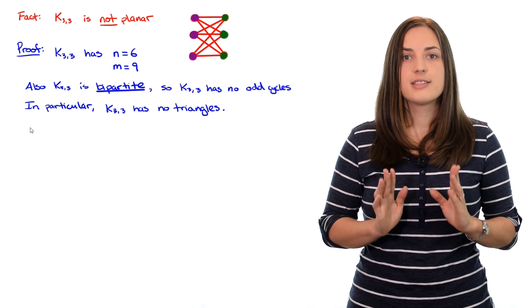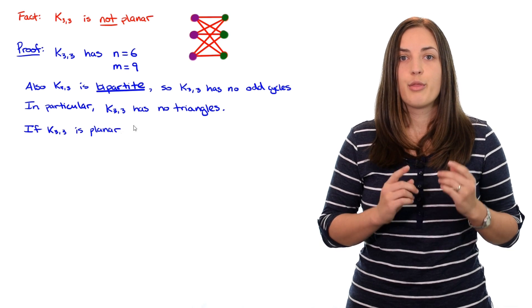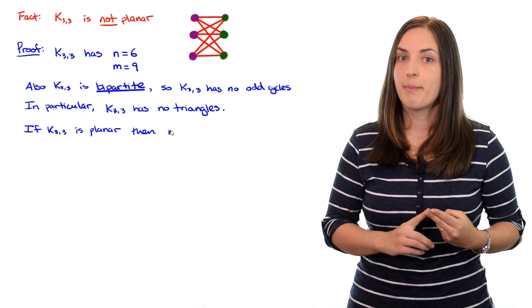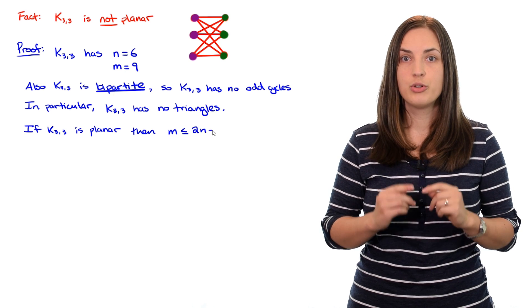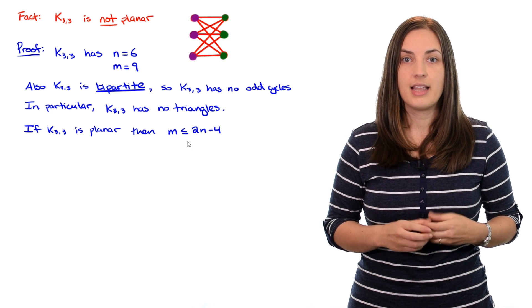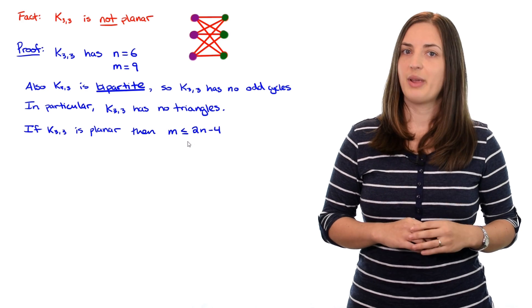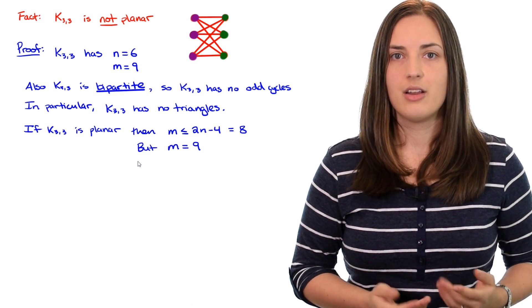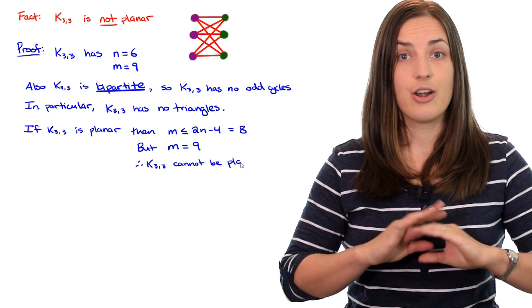If K3,3 was planar, then since it has no triangles we can use the bound we just proved: m must be less than or equal to 2 times n minus 4. Plugging in n equals 6, we get that m should be less than or equal to 8. But we already know that m equals 9, so this cannot be true. Therefore K3,3 cannot be planar.